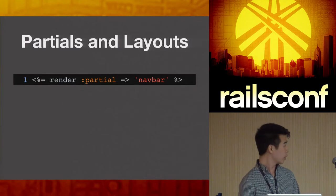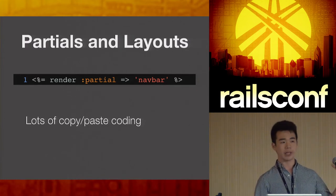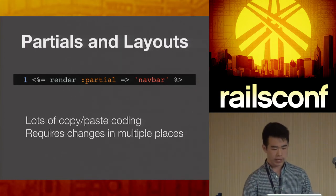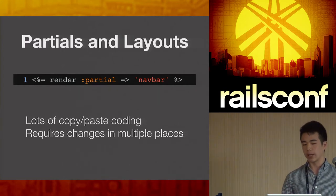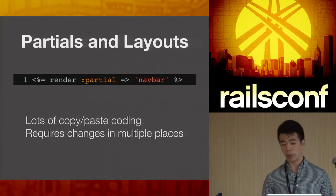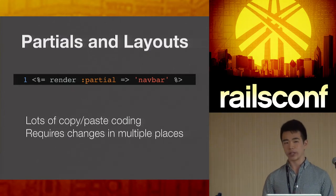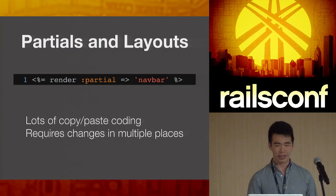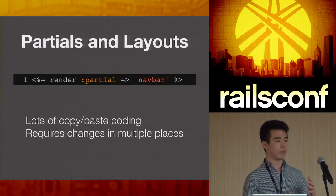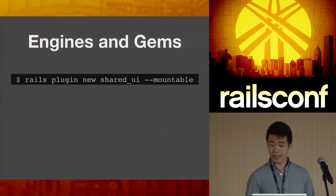As soon as you move to a service-oriented architecture, that breaks down. First, it's a lot of copy-and-paste coding — any change requires copying the nav bar into many places. Second, it requires changes in multiple places, slowing development: you have to go to five, ten, fifteen services and issue a pull request. Things tend to get out of sync very quickly, leading to a bad user experience where the nav bar changes as you move page to page.